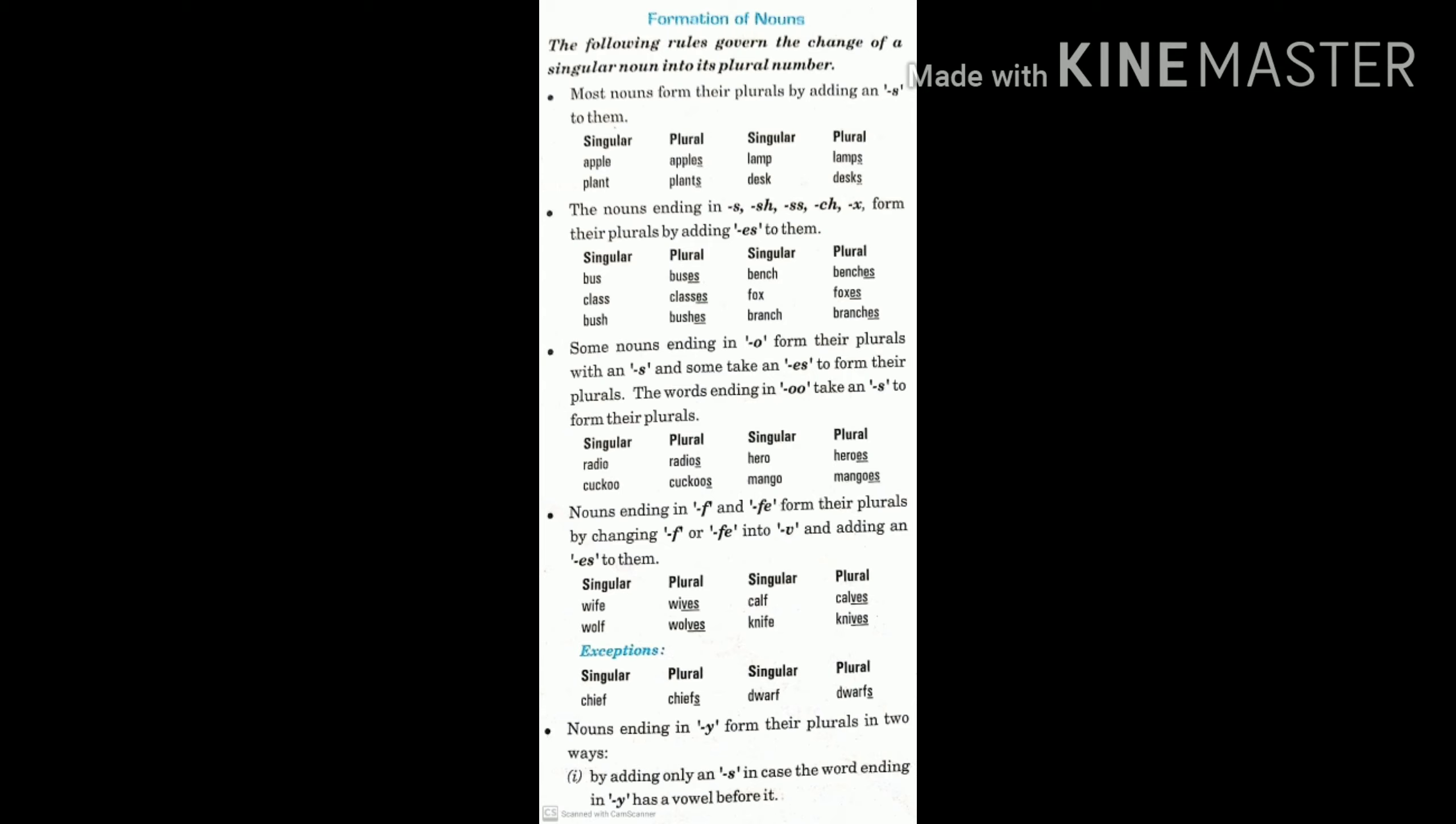Noun ending in y form their plurals in two ways. First is by adding only an s in case the word ending in y has a vowel before it. Like boy, boys, donkey, donkeys. But in the next one, by dropping the word y and adding i-e-s where y is preceded by a consonant. Like army, armies, baby, babies.